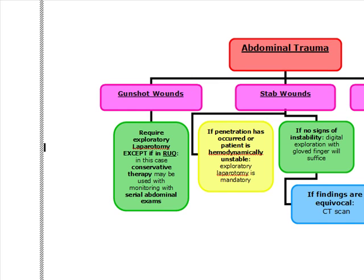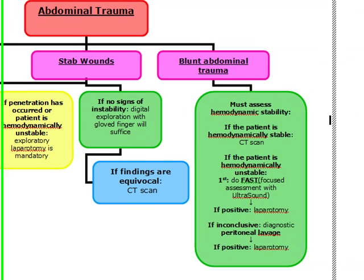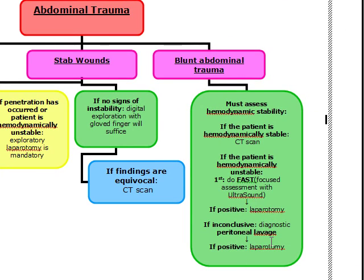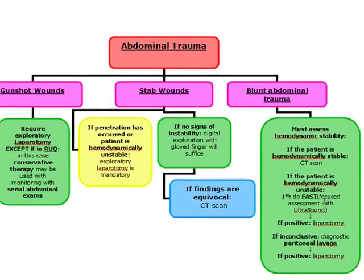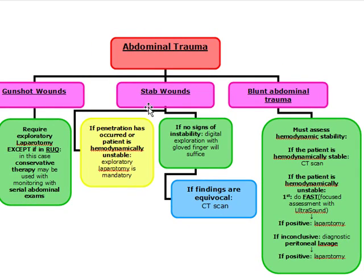Now for blunt abdominal trauma — the most commonly confused topic. People often mix up diagnostic peritoneal lavage versus FAST ultrasound. Just like stab wounds, the first step is assessing hemodynamic stability. If the patient is hemodynamically stable, go straight to CT scan.